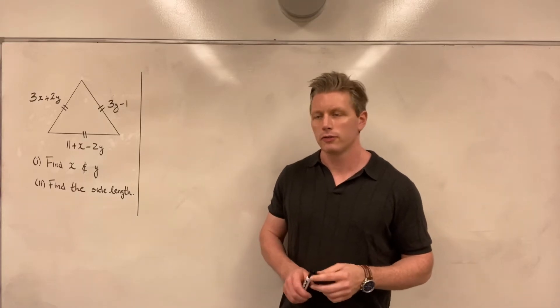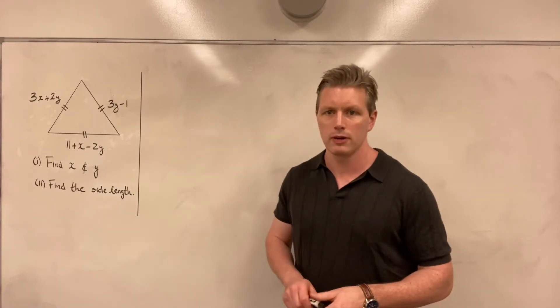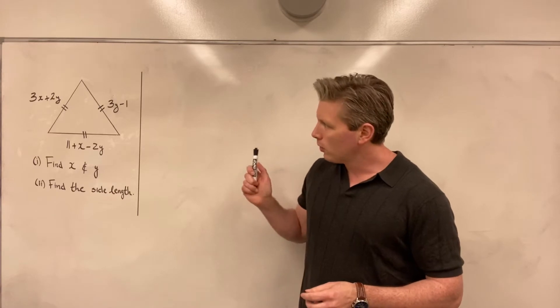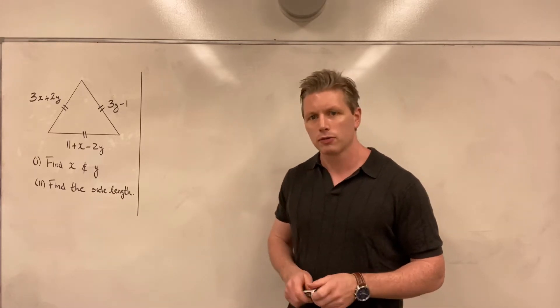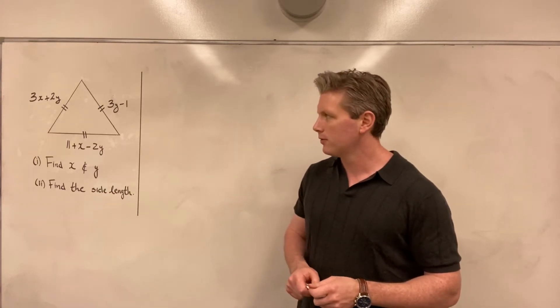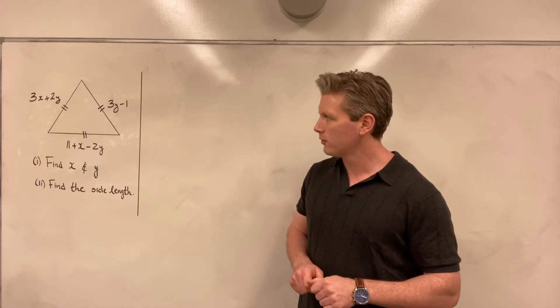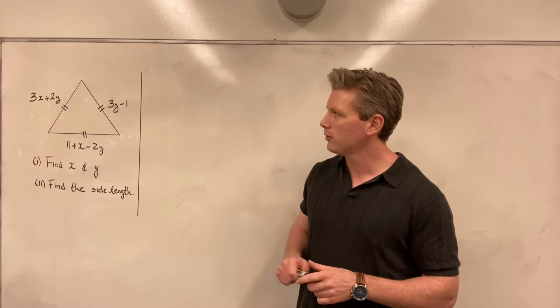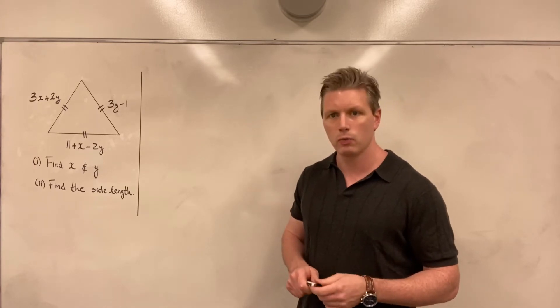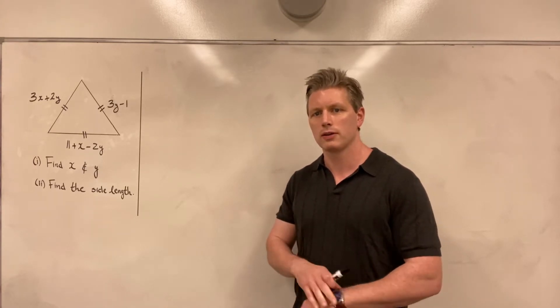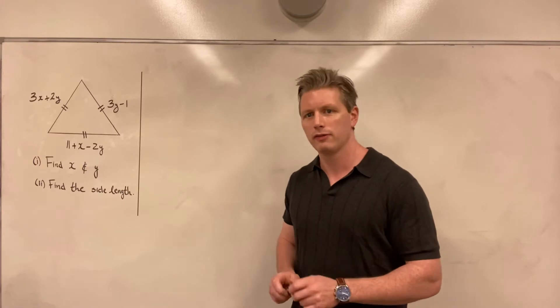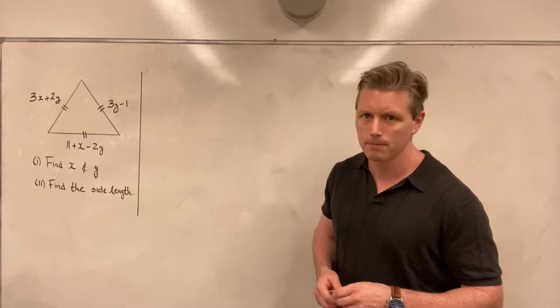Hey guys, so another problem on simultaneous equations. In this problem we're given an equilateral triangle with sides given in terms of x and y. And we are asked to form equations in x and y, solve those equations, and therefore solve for x and y, and then finally find the side length.